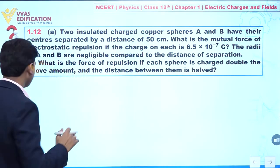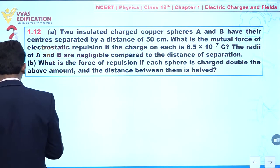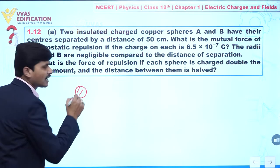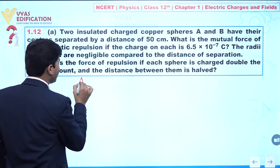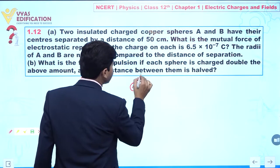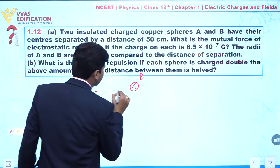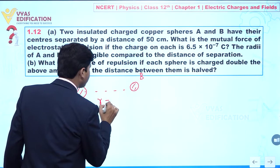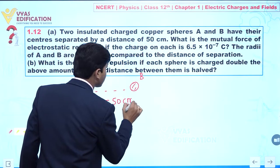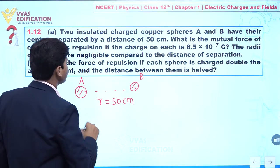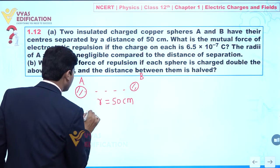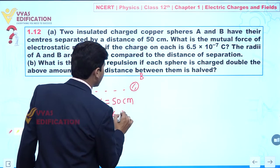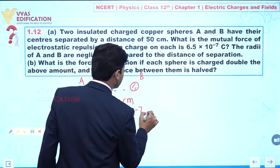We have two spheres — let us suppose sphere A and sphere B. The distance between the two spheres is given as r = 50 centimeters. The charge on each sphere is qa = qb = 6.5 × 10⁻⁷ coulombs.